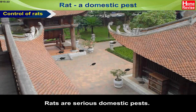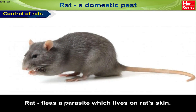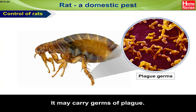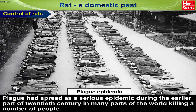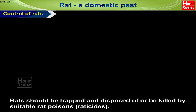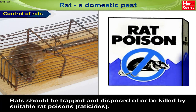Rat: a domestic pest. Control of rats. Rats are serious domestic pests. Besides eating grain and other foods, they also spread germs of certain diseases. Rat fleas, a parasite which lives on a rat's skin, may carry germs of plague. Plague has spread as a serious epidemic during the earlier part of the 20th century in many parts of the world, killing a number of people. Rats should be trapped and disposed of, or be killed by suitable rat poisons, i.e., rodenticides.